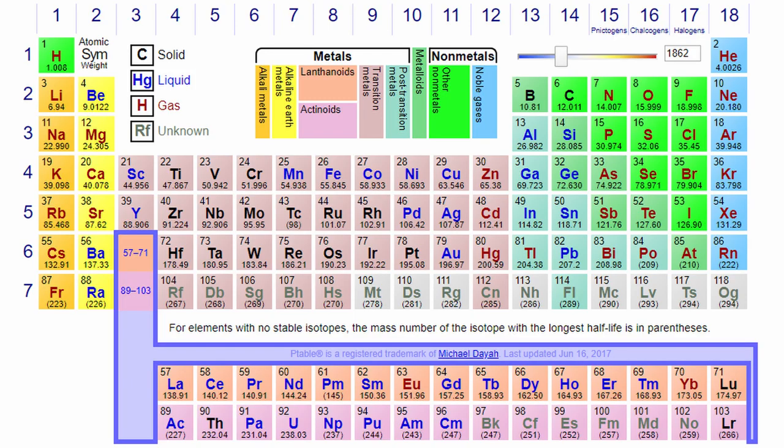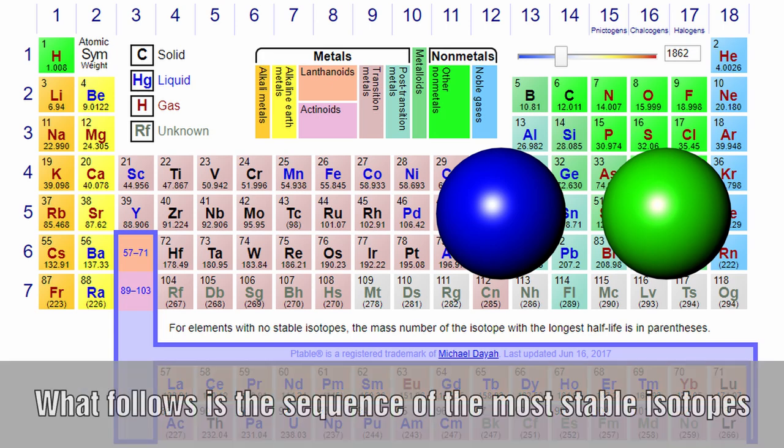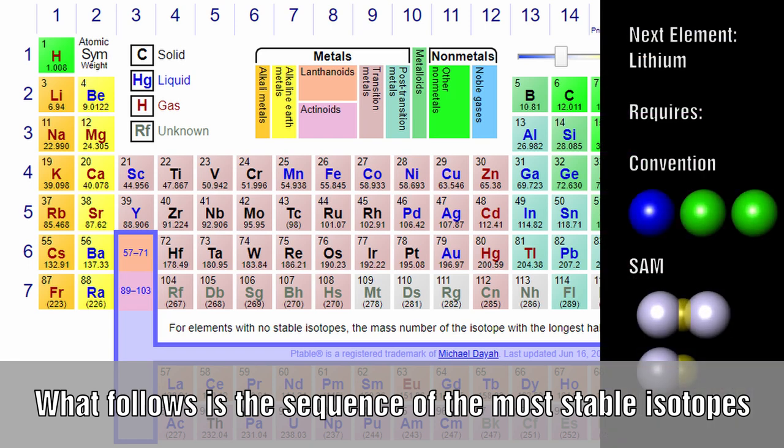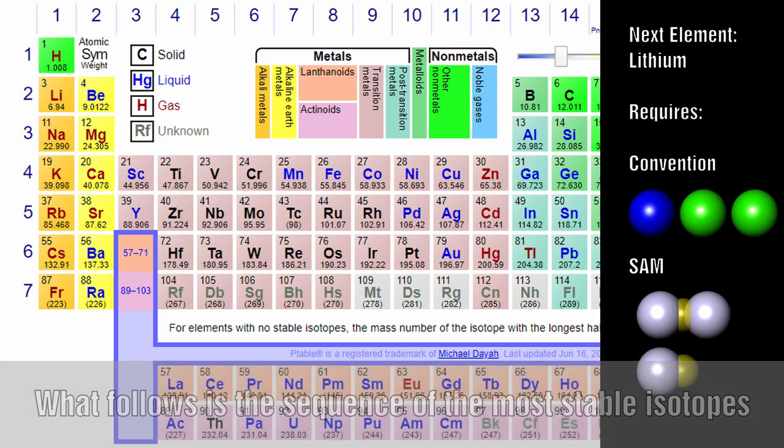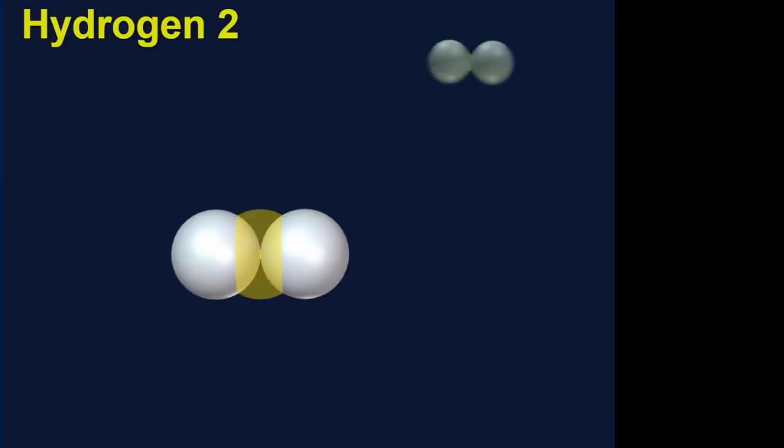When we examine the periodic table, you will notice that most of the time you need to add one proton and one neutron to get to the next element. There are, however, some exceptions to this, and the conventional model cannot explain why this is the case. In the following sequence you will see that I show how many particles need to be added in both the conventional and the SAM model to get to the next element. We start by looking at deuterium. In the conventional model this is made of a proton and a neutron. Here we have two protons joined together by an electron.